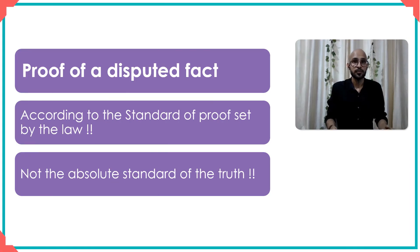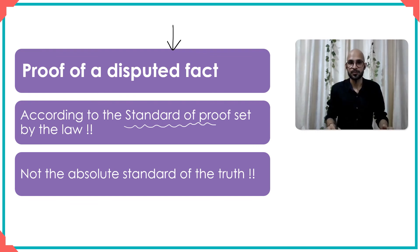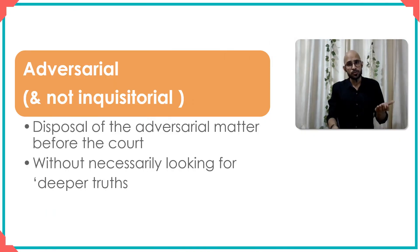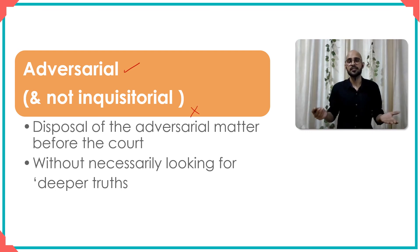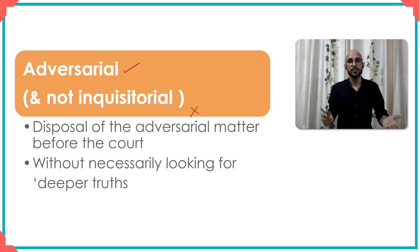When we look at the proof of a disputed fact, it is according to a standard set by the law. For example, in criminal trials you have the standard of beyond all reasonable doubt. Beyond all reasonable doubt is not an absolute standard of truth — it is a high standard, but it is still a fictitious standard beyond which we believe that this much is good enough. We also need to acknowledge that ours is an adversarial system and not an inquisitorial system. The court concerns itself with the dispute brought to it by the two adversaries; it doesn't necessarily delve into unearthing deeper truths — that is not the concern of the court in an adversarial system.